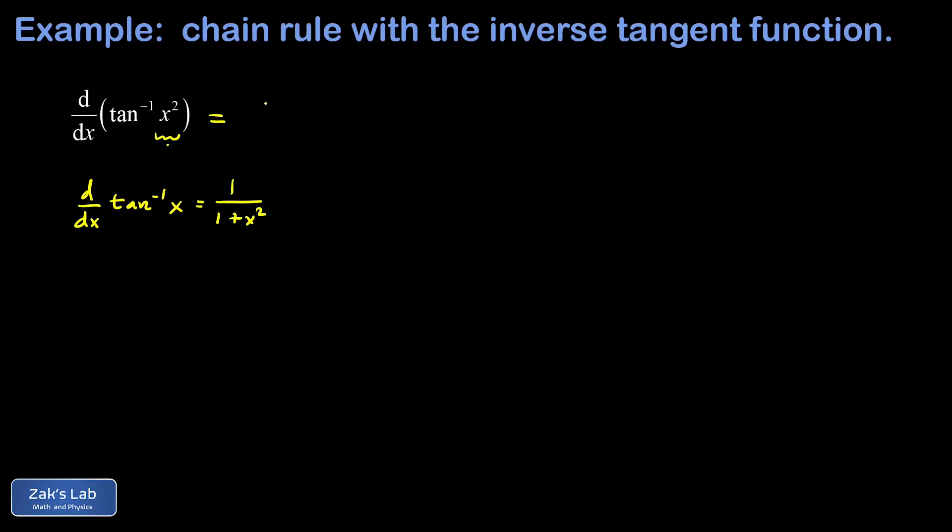So the derivative of the inverse tangent of something is just 1 over 1 plus that thing, x squared, squared. Then the chain rule says I have to multiply by the derivative of that interior function, which is 2x.